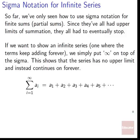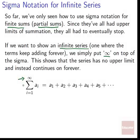So far we've only seen how to use sigma notation for finite sums — partial sums — since they've all had some upper limit of summation on top of the sigma, meaning they all eventually stop. If we want to show an infinite series — where the terms keep adding forever — we simply put an infinity symbol on top of the sigma. This shows that the series has no upper limit and instead continues on forever.